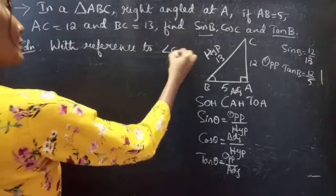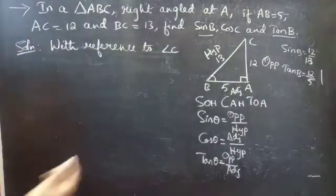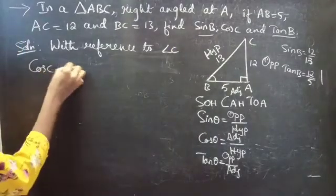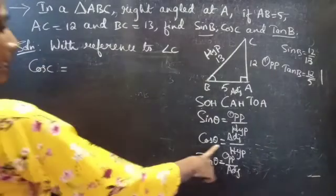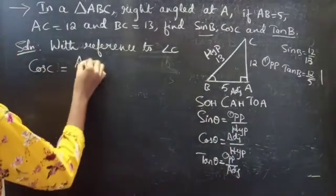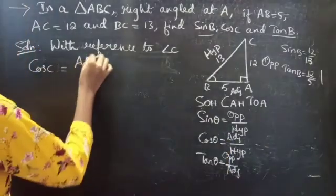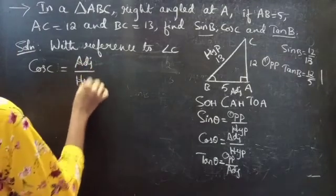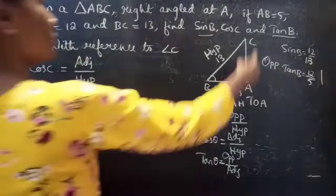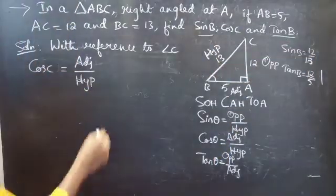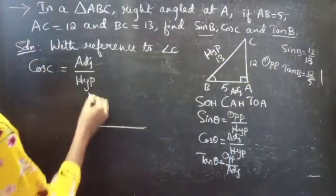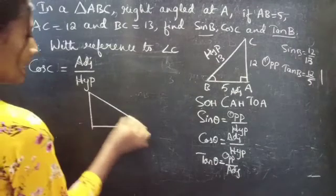With reference to angle C, we have to find cos C. We know that cos theta equals adjacent by hypotenuse. We are going to tilt this figure towards right to better visualize the sides with reference to angle C.